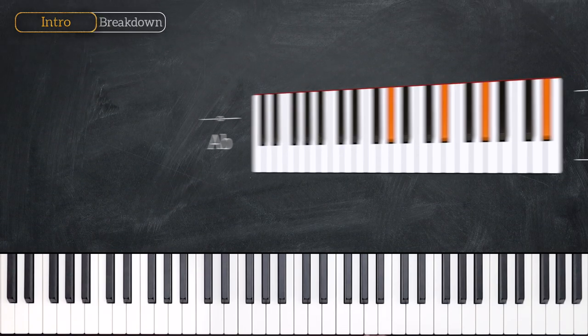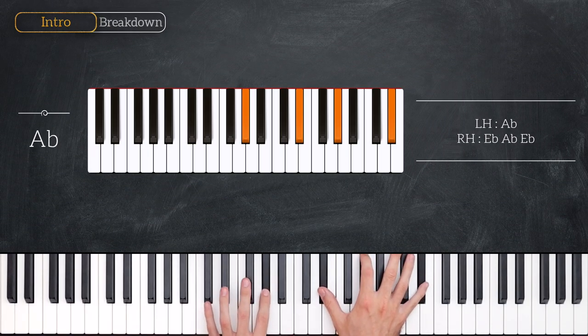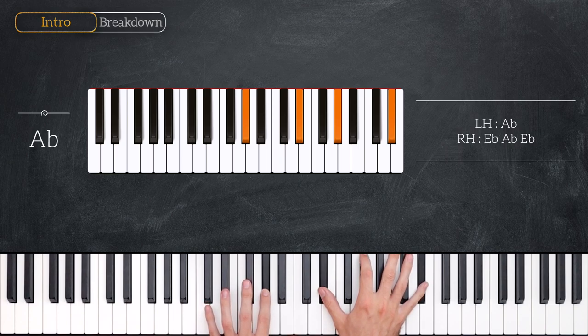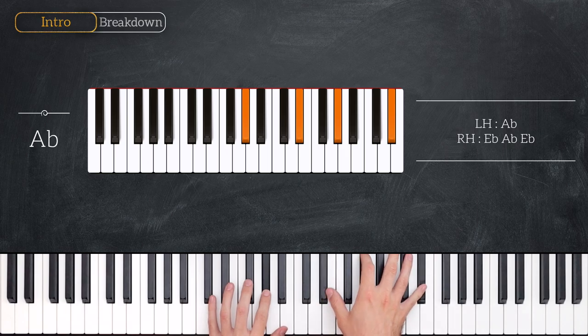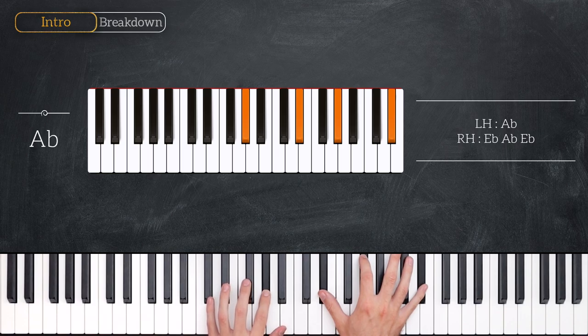First of all, we have an A-flat, and this is neither major nor minor as it doesn't have a third in it. So that's A-flat in the left hand, and then E-flat, A-flat, and E-flat for the right hand. And throughout all of these chords, your left hand is going to stay the same for two chords in a row.